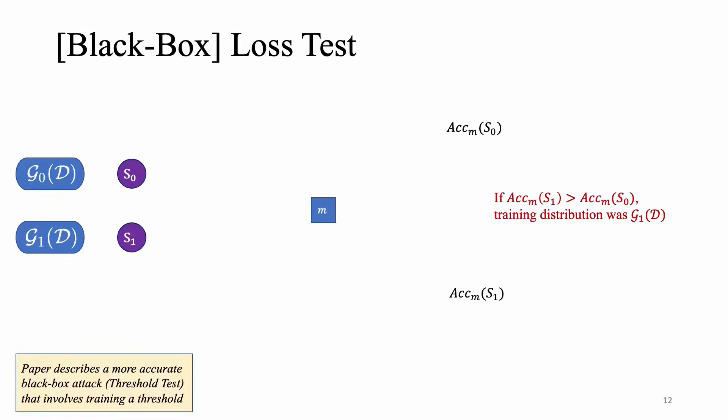And we do have another variant of the black box test which we termed the threshold test that involves another step for training a threshold, and that performs slightly better than the loss test.